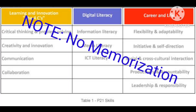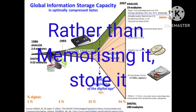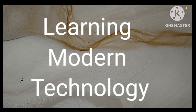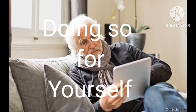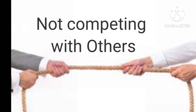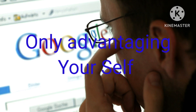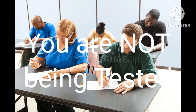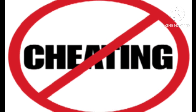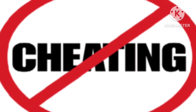These are what is regarded as 21st century skills. Note: no memorization. It is therefore impossible for the average person to remember it all. Learning modern technology, doing so for yourself — you are not competing with others. By having notes, looking up, or using the technology, you are only advantaging yourself. You are not being tested. So you are not cheating by looking things up for yourself rather than using your memory.